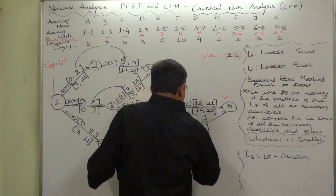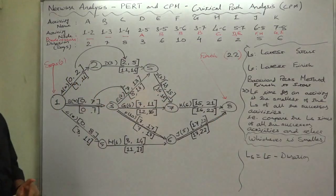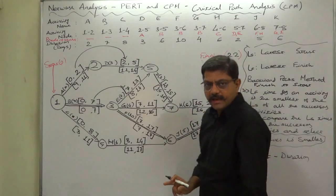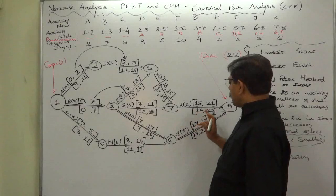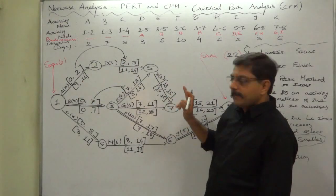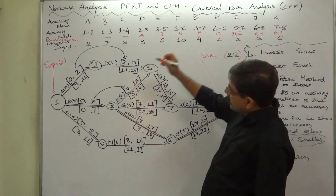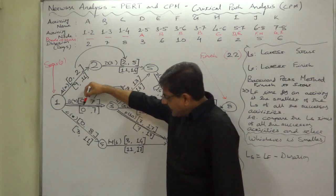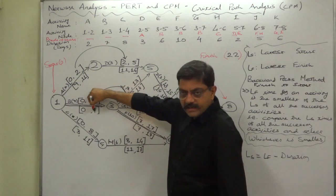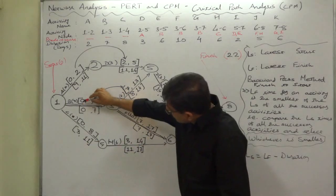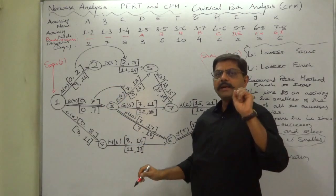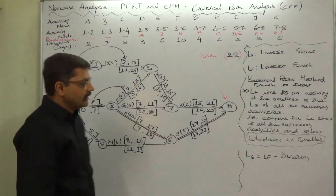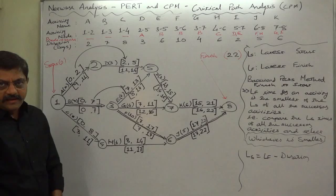This is another method of determining the critical path - by comparing earliest start and latest start times (both should be equal) and earliest finish and latest finish times (both should also be equal). If both pairs are equal, the activity is a critical activity. There are three critical activities: B, F, and J. In this way we can determine the critical path. Thank you very much.